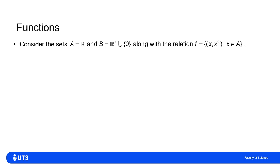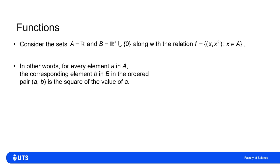So (1, 1) will be in the relation, (2, 4) will, (-10, 100) will be. In other words, for every element little a in A, the corresponding element little b in B is just the square of the value in A to make up the ordered pair (a, b).